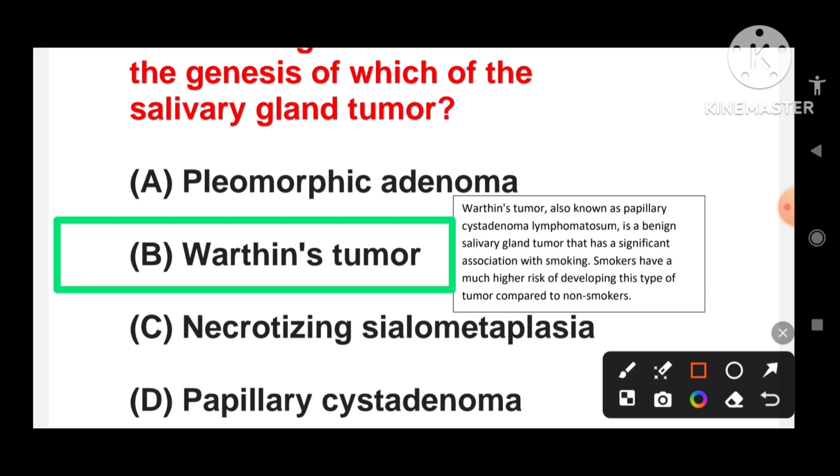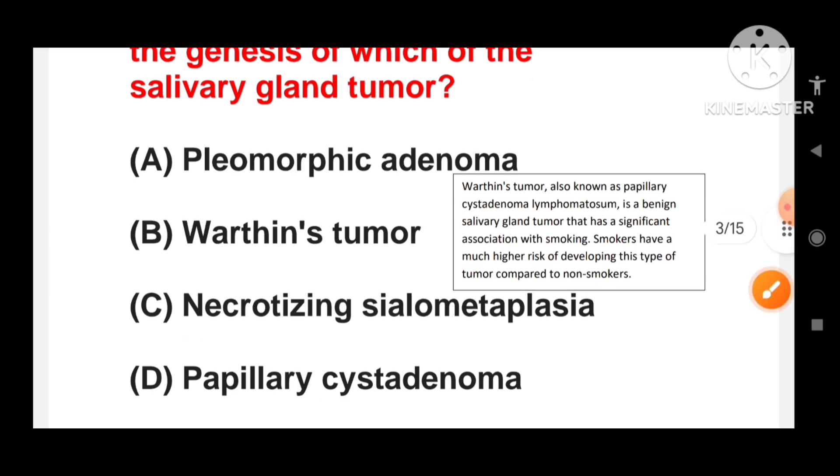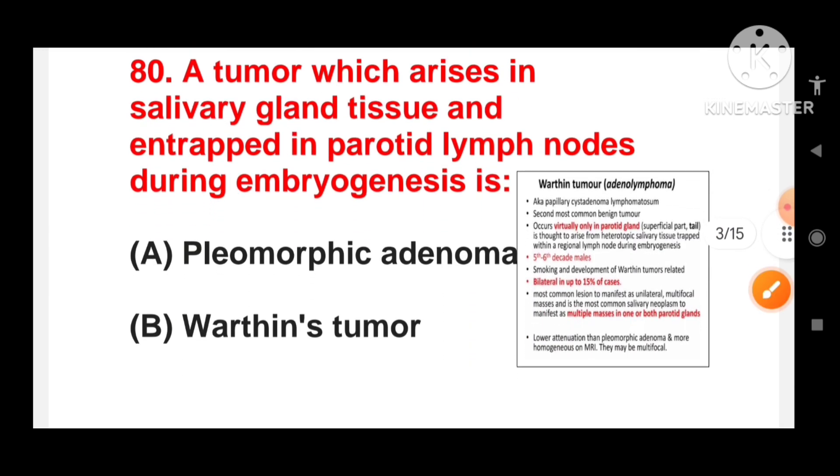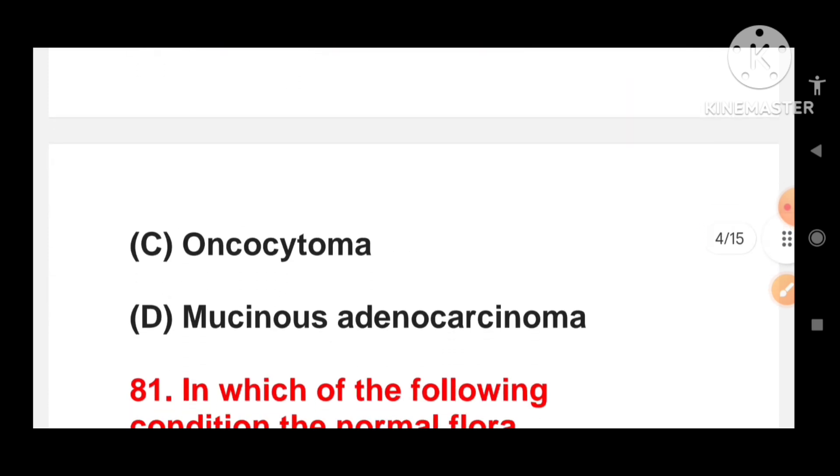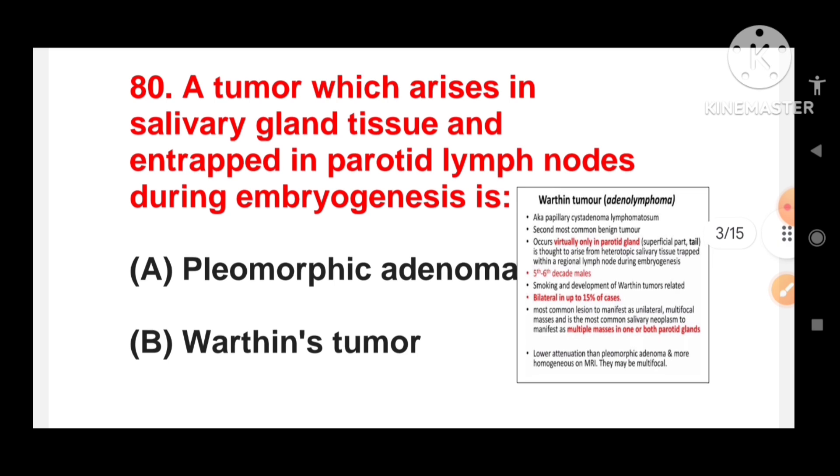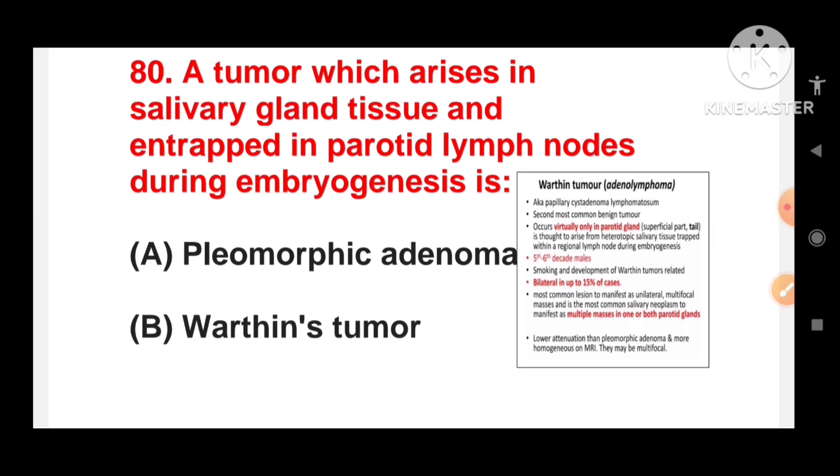Smoking is associated with the genesis of Warthin's salivary gland tumor. So what do we say? Papillary cystadenoma lymphomatosum. We will remember that. Next question is, the tumor which arises in salivary gland tissue and entrapped in parotid lymph node during embryogenesis is pleomorphic adenoma, Warthin's tumor, oncocytoma, or mucinous adenocarcinoma? So Warthin's tumor is the correct answer for this.